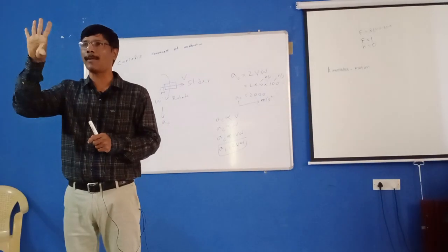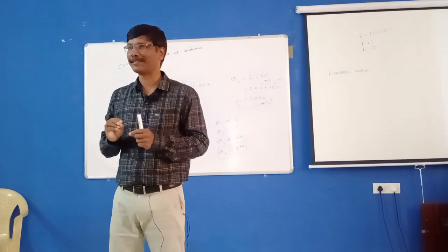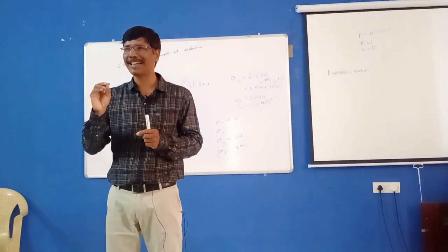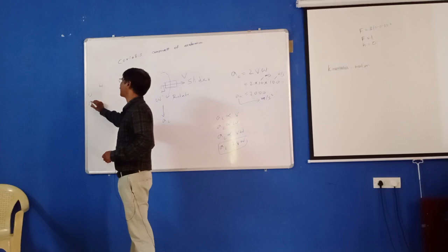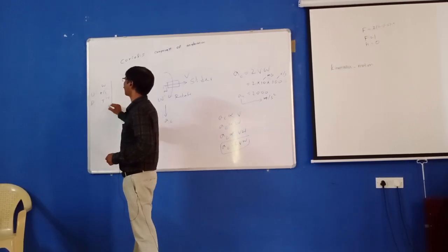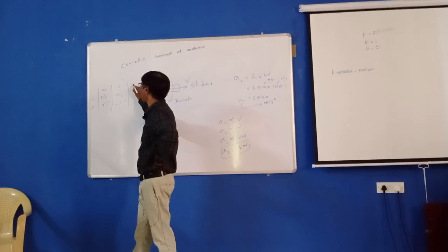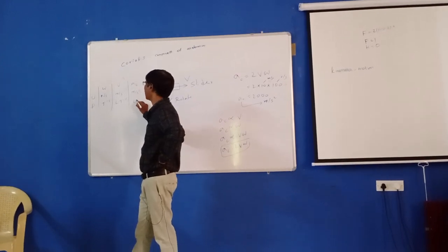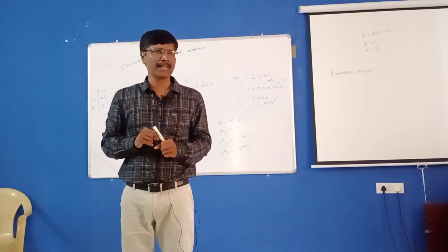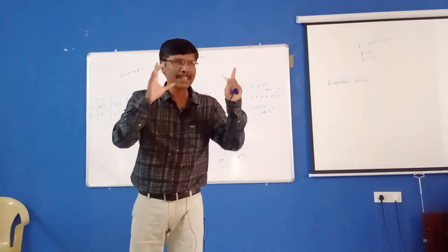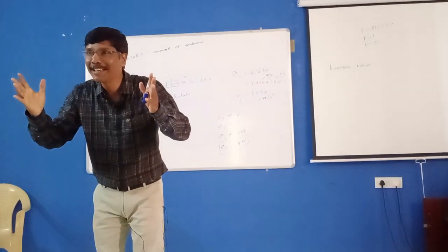When you know the unit, you are a one-eye engineer. And another eye is dimension. What is the dimension of angular velocity? Unit: radians per second. Dimension: T to the power minus one. What is the unit of velocity? Meter per second. What is the unit of acceleration? Meter per second square. When you know the unit, you are the one-eye engineer. When you know the unit and dimension, you are the engineer with two eyes.